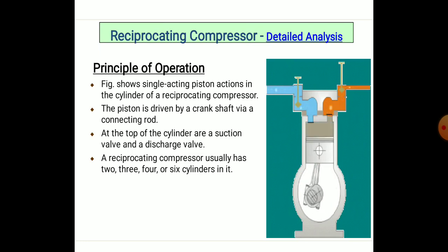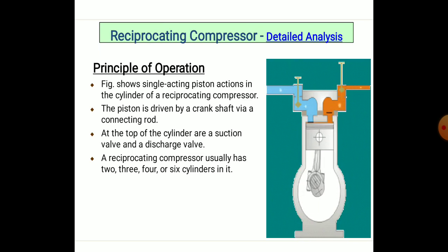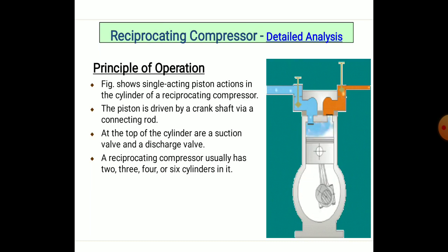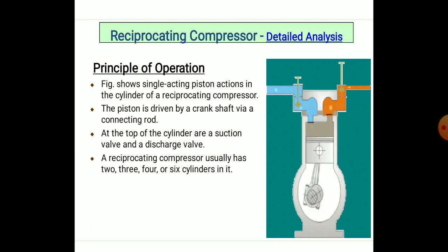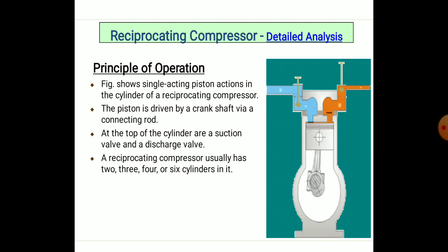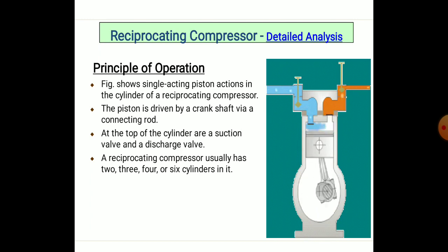The principle of operation of the reciprocating compressor is shown in the diagram. It shows a single-acting piston in motion — the orange line indicates the outlet port and the blue line indicates the inlet mode. Reciprocating motion of the piston compresses the air and delivers it at higher pressure through the orange side. The piston is driven by the crankshaft via a connecting rod. At the top of the cylinder, there are two valves: the suction valve and the discharge valve, which provide suction of air from the atmosphere and discharge it to the reservoir or container.